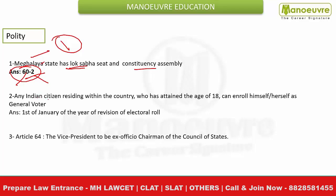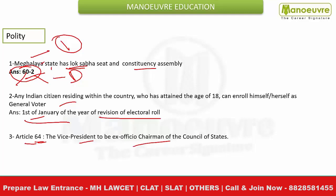Another question was related to the Election Commission - specifically, when persons enroll themselves or when the Election Commission revises the electoral voting list, what is the reference date? The right answer is 1st January. This should be easy to mark. One more question from Polity was related to Article 64 of the Constitution. So there were 3 questions from the Polity section.